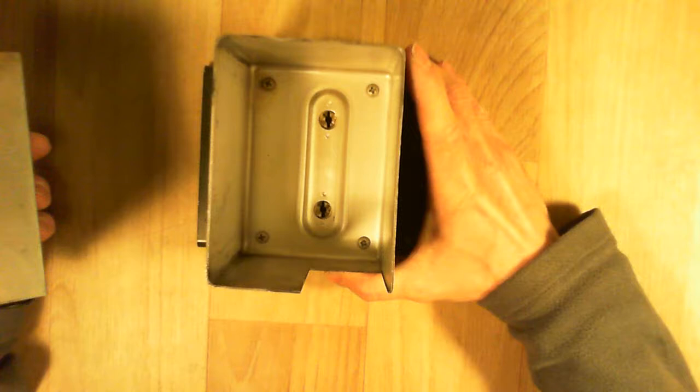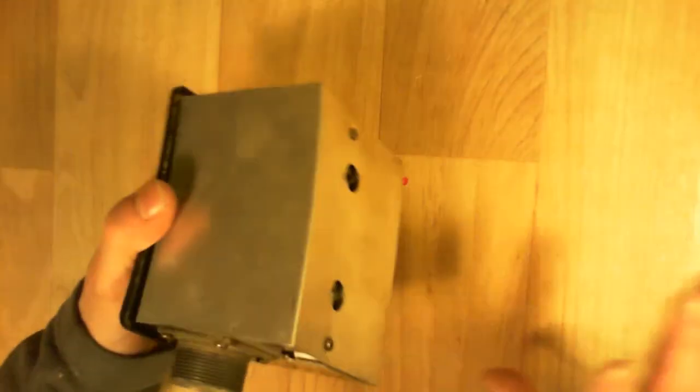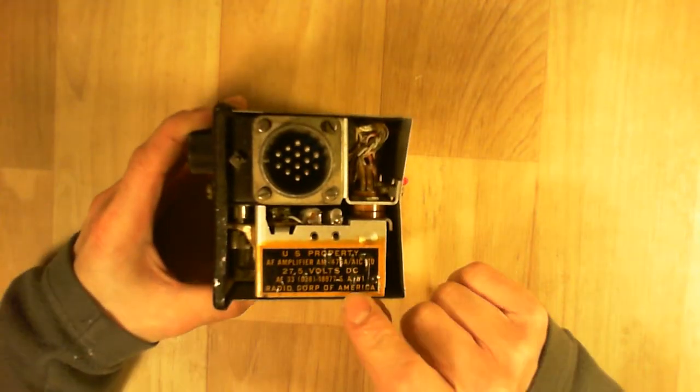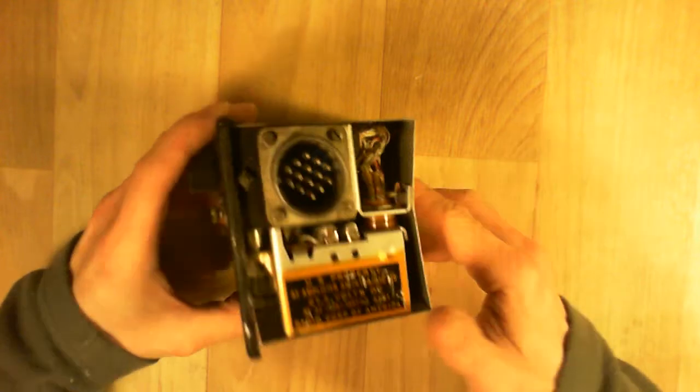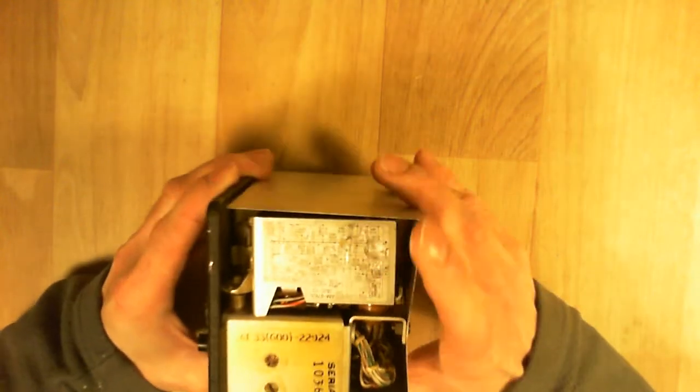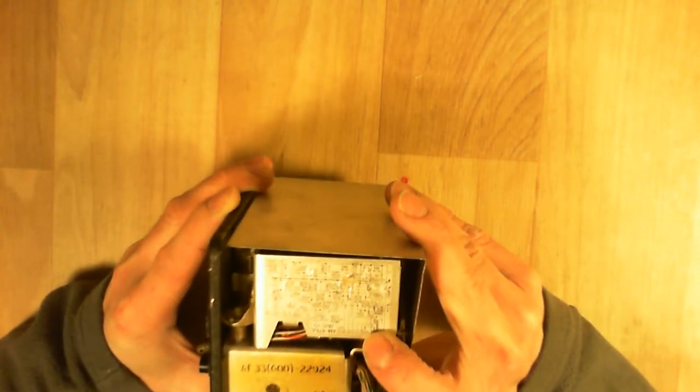Here we are, the box looking inside. So one more sticker here, US property. There is an amplifier inside, a small schematic here.